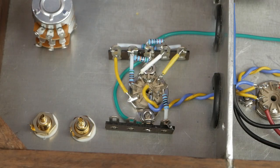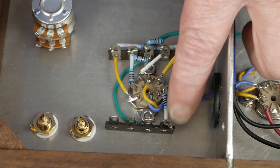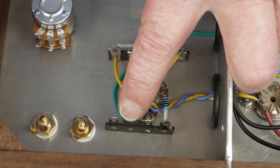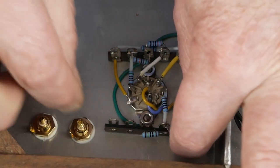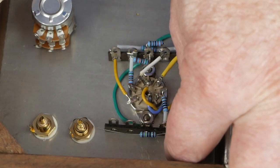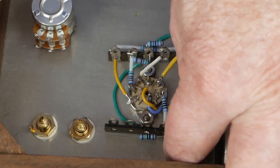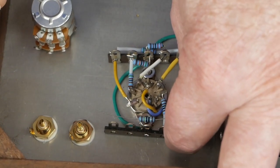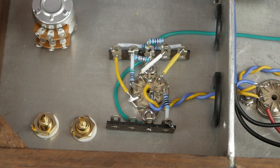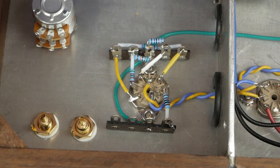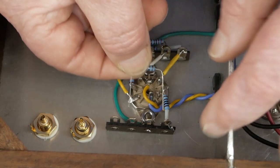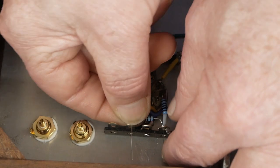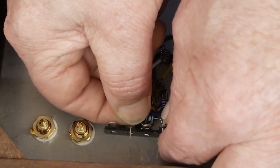So next we have the one meg grid leak resistor that goes from this terminal over to this center one. And it's going to go across like that. Actually, I might put that one on the inside too, just like I did on the other side. So I'll put that like that.